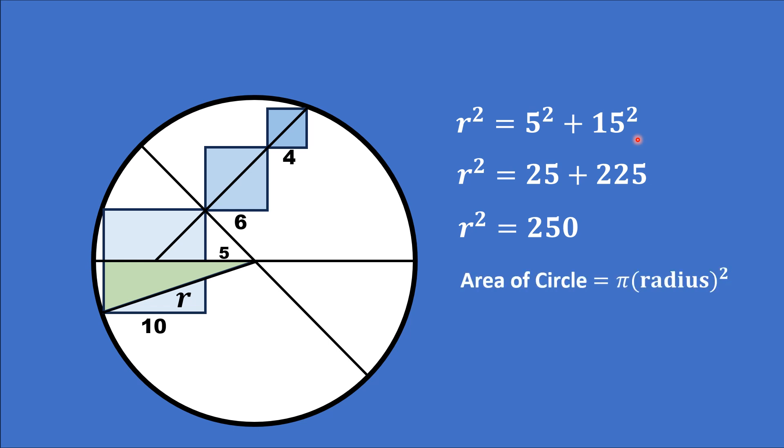We know that the area of a circle is π times the square of its radius, and we have R² which is 250. Substituting this, we get the area of this circle is equal to 250π square units.